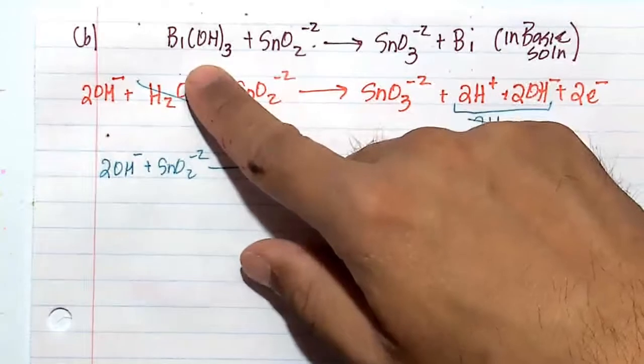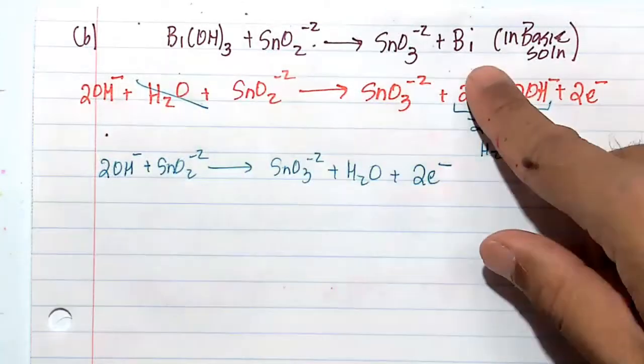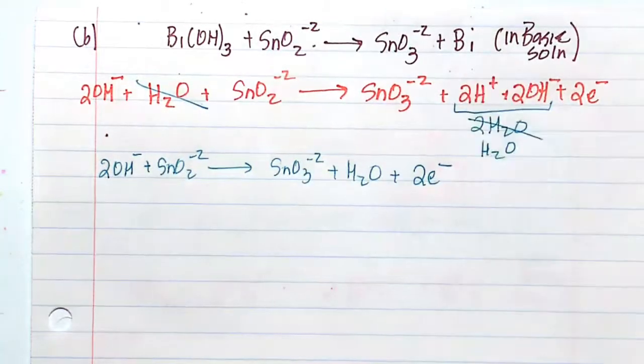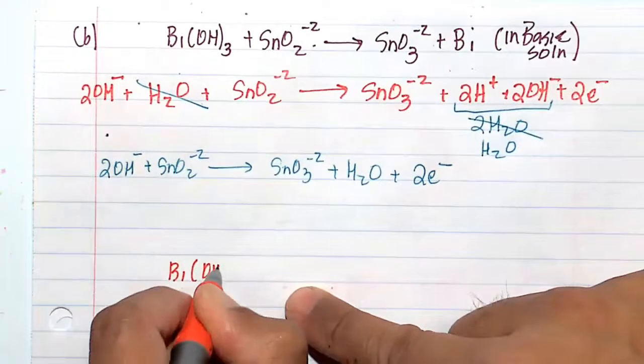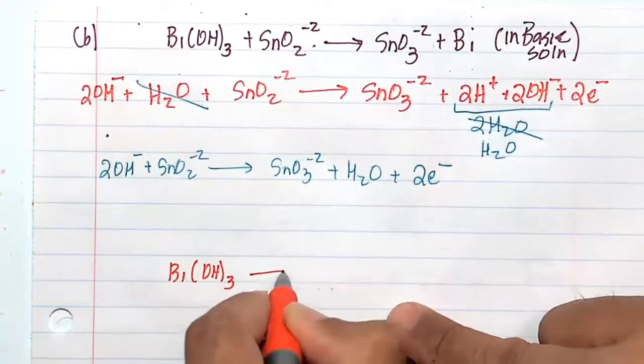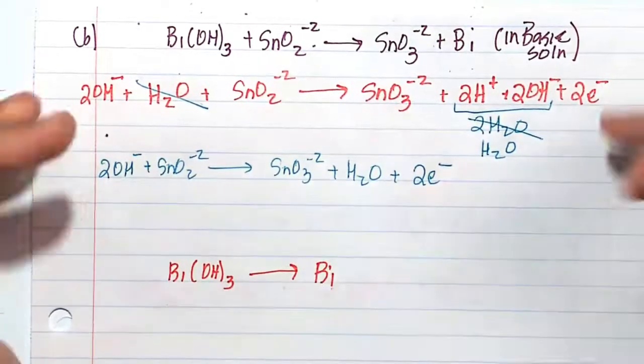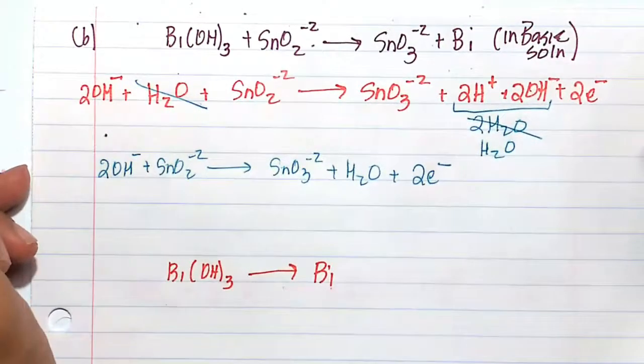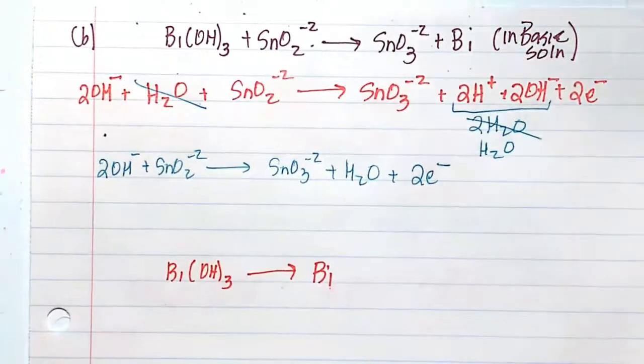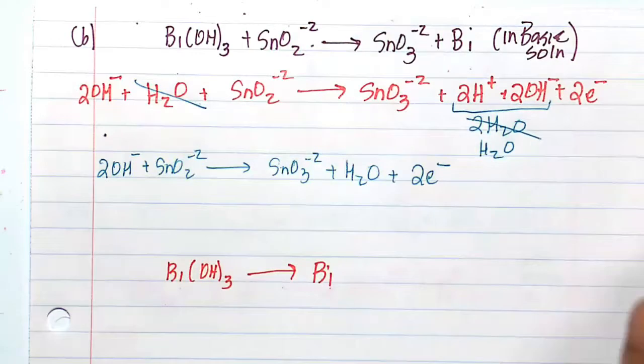All right, now we have bismuth hydroxide going to just plain old bismuth. Let's go ahead and balance this half reaction. I'm going to do this right here. Bismuth hydroxide going to Bi. You see here I'm splitting this fundamental equation up into the oxidation form and then the reduction form. I'm realizing that joining the oxidation reduction half reactions, the redox reaction, will give me the full reaction.